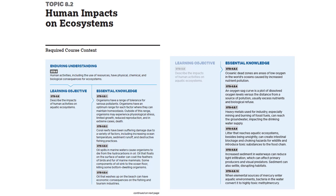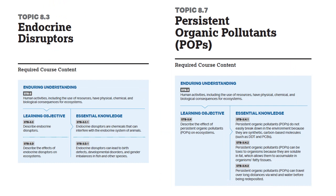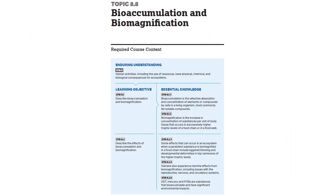Last PowerPoint we talked about ecological tolerances, coral reefs back in our biodiversity unit, oceanic dead zones, and oxygen sag curves. Today we'll talk about heavy metals, mercury and methylmercury, endocrine disruptors — describing their effects on ecosystems — persistent organic pollutants (POPs), and finally bioaccumulation and biomagnification, including their effects on human health and the environment. This may be a concept familiar from biology class.